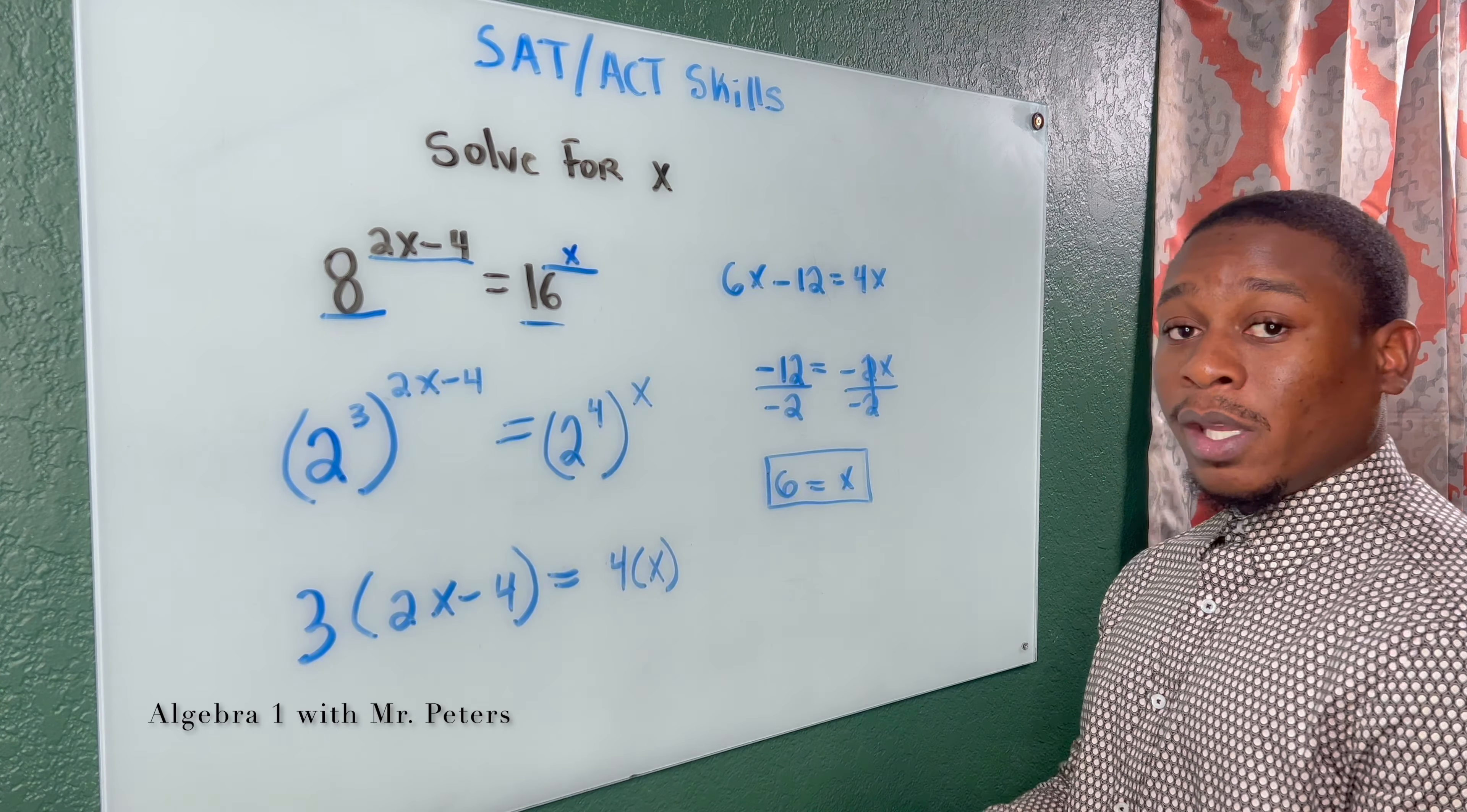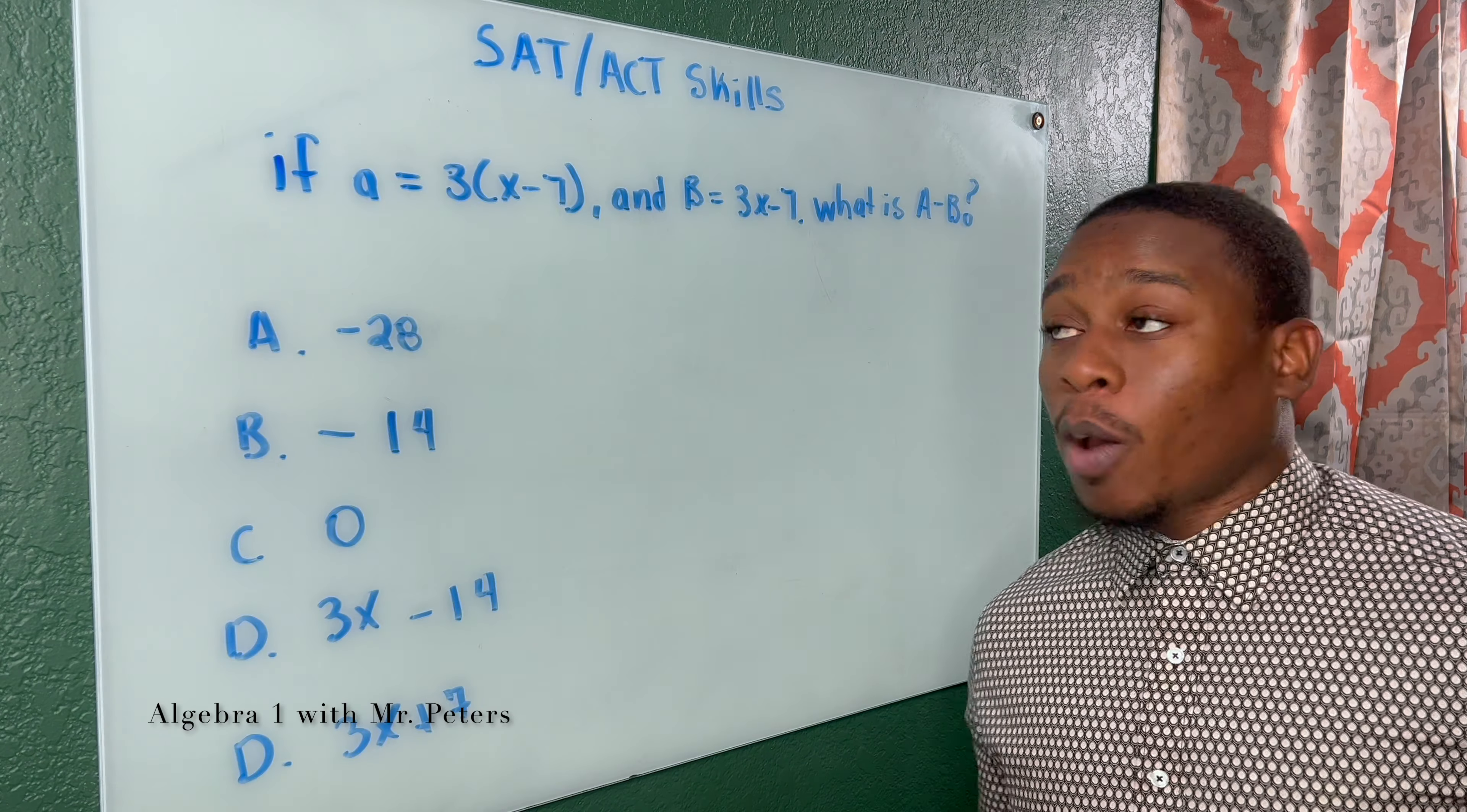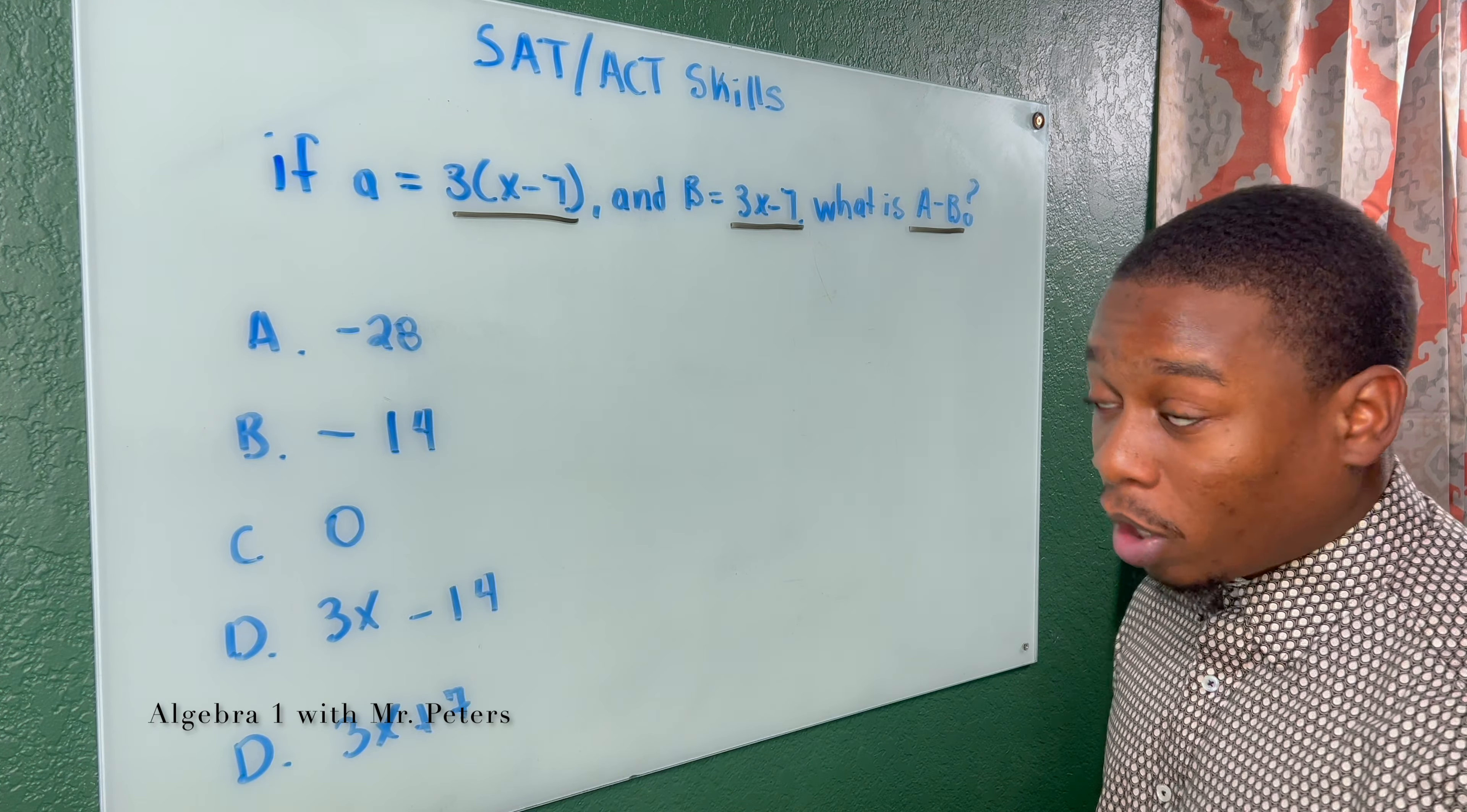So anytime you see a problem like this where you have exponents in your variable, you should automatically think, hey, I have to rewrite my bases so that we have the same base and then solve. In this problem, they are now giving us basically an expression, and they want us to combine these expressions by subtracting. So this is going to be very similar to polynomials and operations with polynomials.